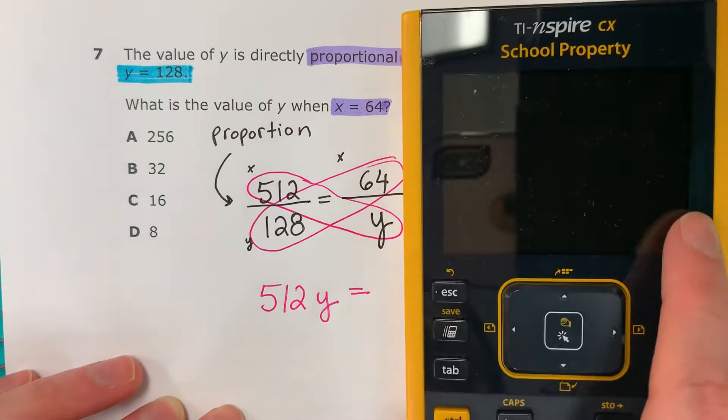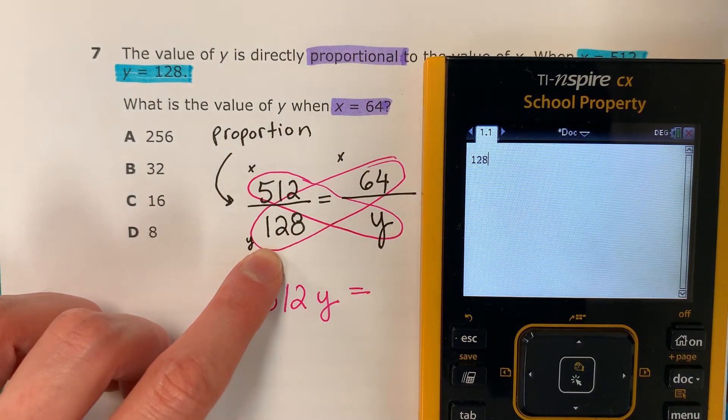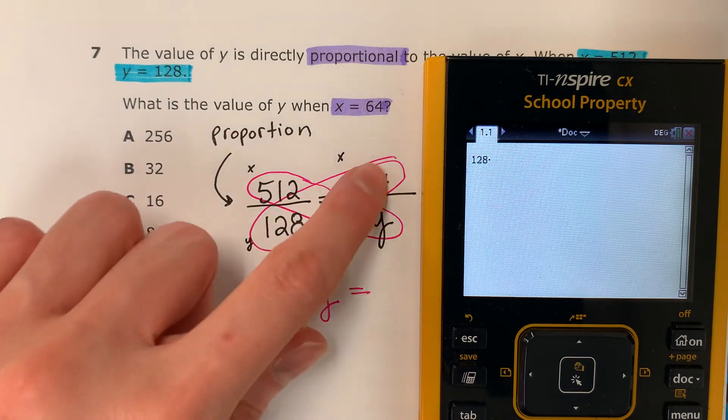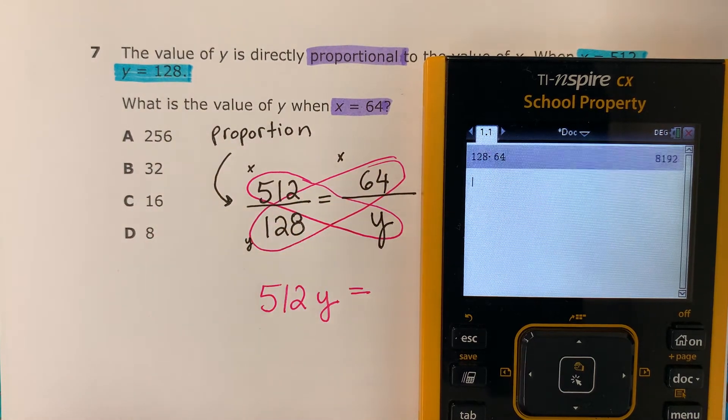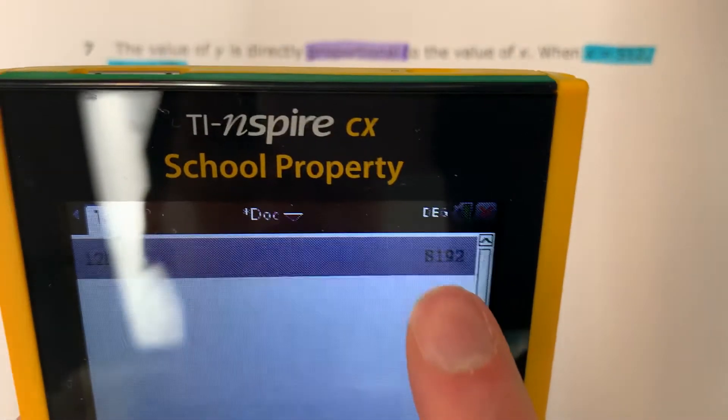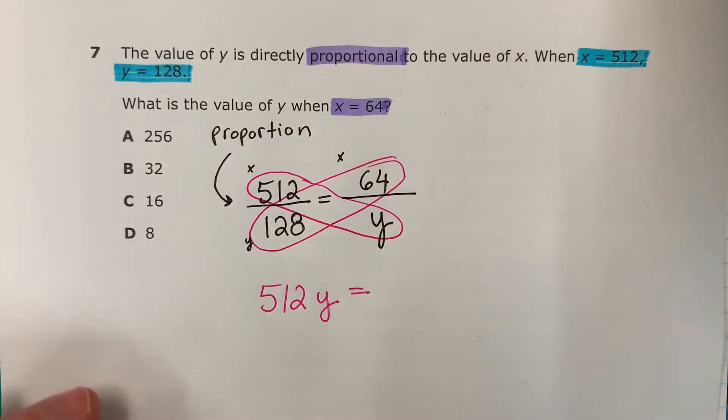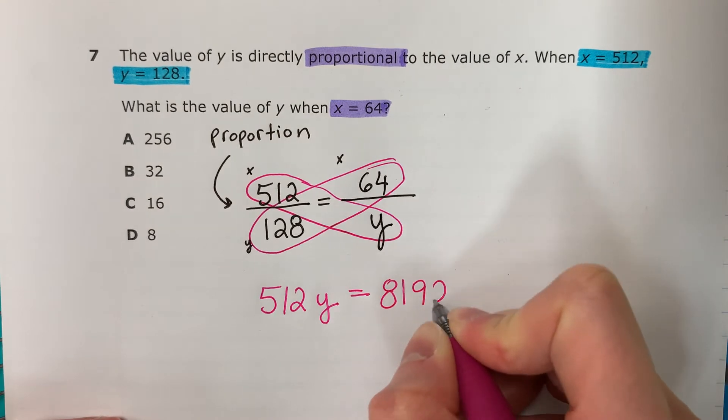Let's go ahead and put that in the calculator. 128 times por 64. 8,192.